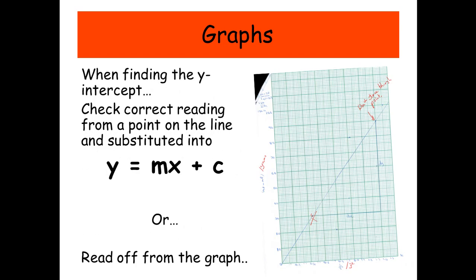Well, if you're confident your gradient is correct, then you can use y equals mx plus c. Or if your line of best fit doesn't go below the origin, then you can just read off from the graph. And I would be safe and I would just read off from the graph rather than put it back into y equals mx plus c. Because you might have made a mistake with your gradient. And then at least you're not going to lose a mark for the y-intercept.